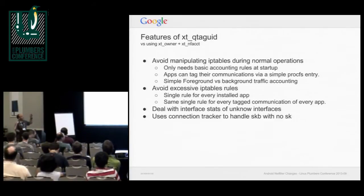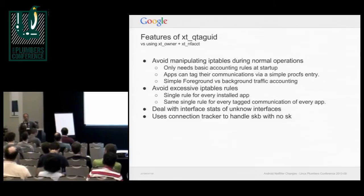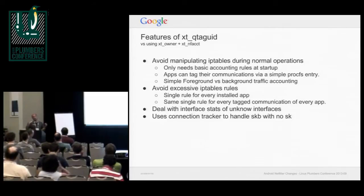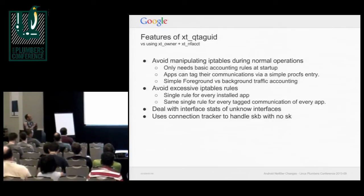With NFACT and XT owner, to track every single app individually would seem to require one rule per installed app inside the system. With a large number of apps that gets very large. And if apps want to track sub-operations — like Gmail saying I need to track downloads of attachments — you end up with Gmail adding five different rules just to track its own little features. With QtagUID instead, there are single static rules in IP tables set at startup, with no need to tweak them.